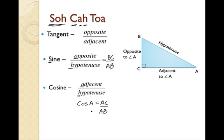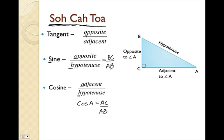So that's how you figure out the trig functions. Depending on which trig function is asked for, SOHCAHTOA will help you remember: sine is opposite over hypotenuse, cosine is adjacent over hypotenuse, and tangent is opposite over adjacent.